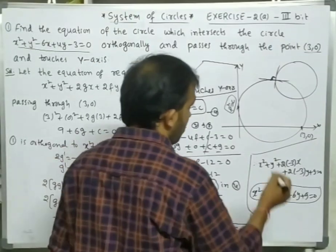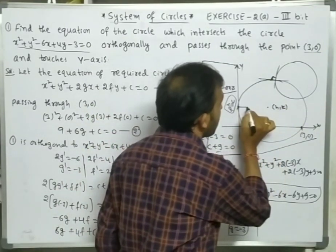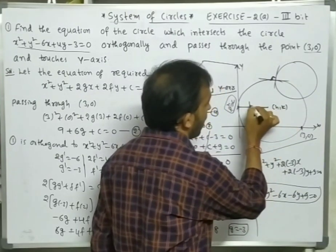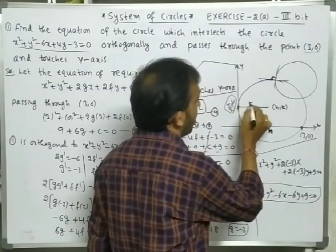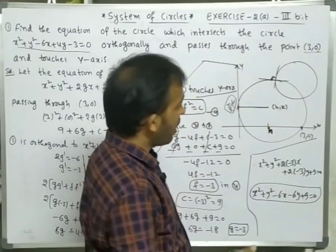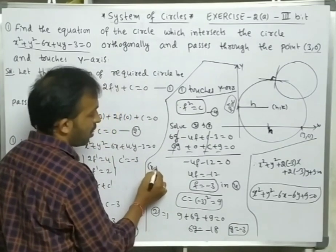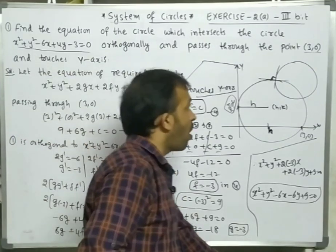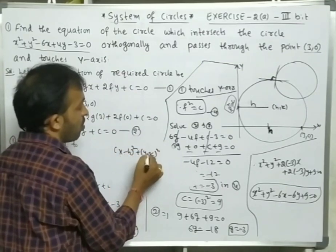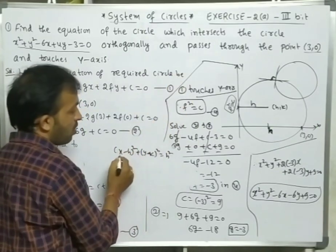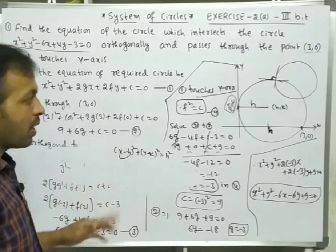In another way we can solve this: let the center be (h, k). As it is touching the y-axis, the radius is h units. So the equation becomes (x − h)² + (y − k)² = h². Substitute (3, 0) to get one equation, then write the orthogonal condition with the given circle, and you will get h and k values.